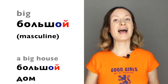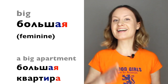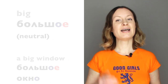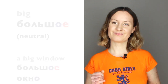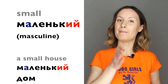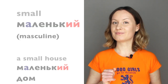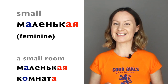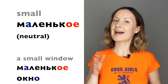Let's see some other adjectives. 'Big' is большой. Большой дом — 'big house.' Большая квартира — 'big apartment.' Большое окно — 'a big window.' The opposite of big is small — маленький in masculine. Маленький дом — 'a small house.' Маленькая комната — 'a small room.' Маленькое окно — 'a small window.'